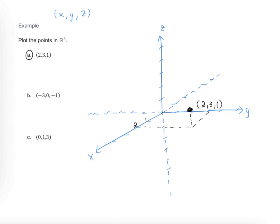And now for part b, we're looking at the ordered triple (-3, 0, -1). Let's do this one in red. We're going to go negative 3 units in the direction of x, so that's 1, 2, 3 back this way. Zero units in the direction of y, so we're not going to go left or right any.